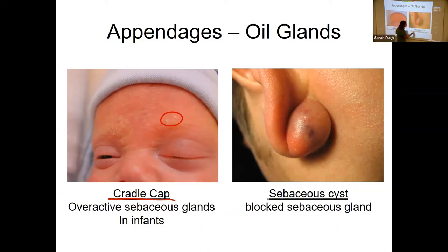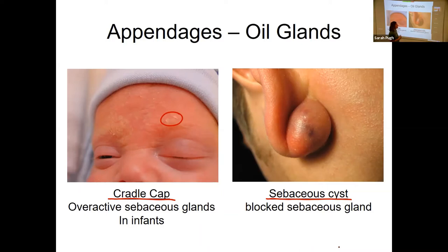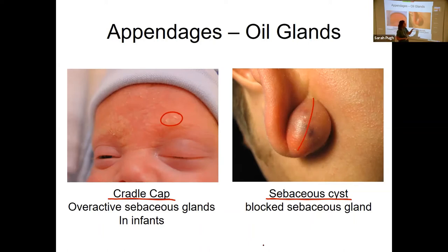Another disorder is a sebaceous cyst — you're looking at the back of somebody's earlobe. A sebaceous cyst is basically just a blocked oil duct. It's not like acne; it's not a pimple you can pop and release all the sebum and pus. Instead, this requires surgery. They actually have to cut through the cyst, drain it, and a lot of times they'll pack it and let it heal from the inside out.